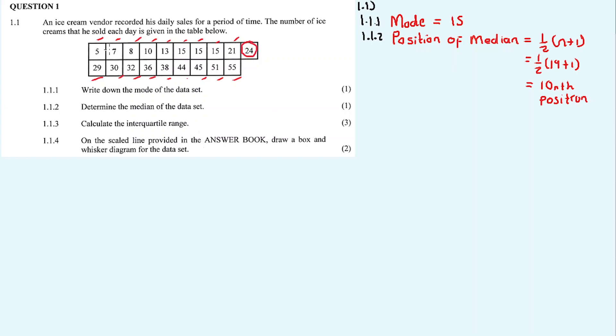So let's count: 1, 2, 3, 4, 5, 6, 7, 8, 9, 10. Our median is 24. When we count, we go from the left and count from the right equally.